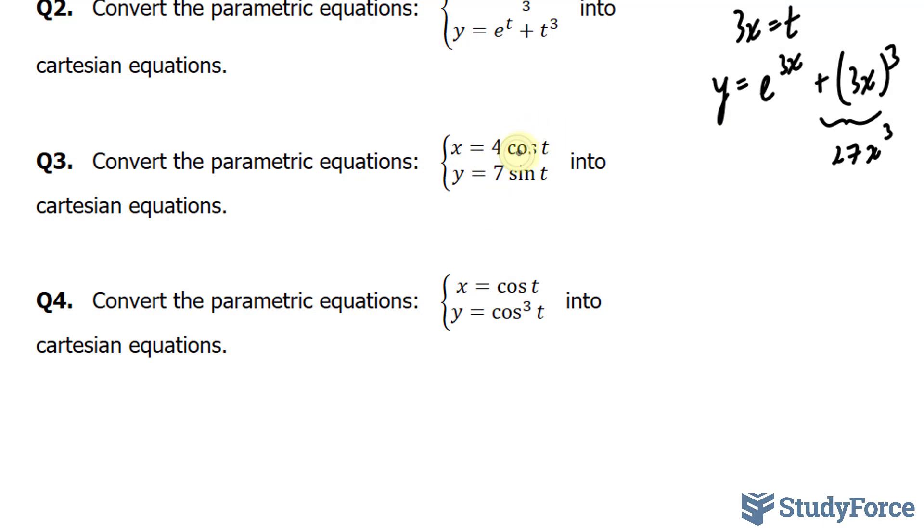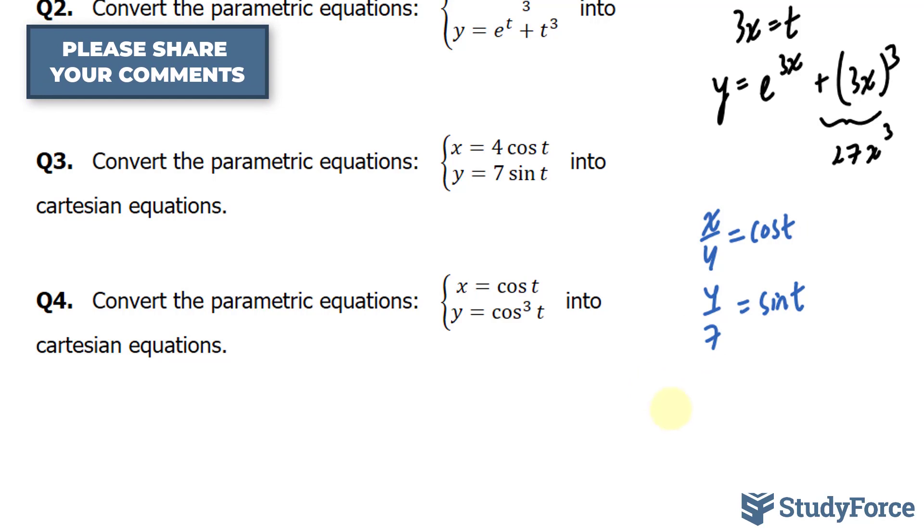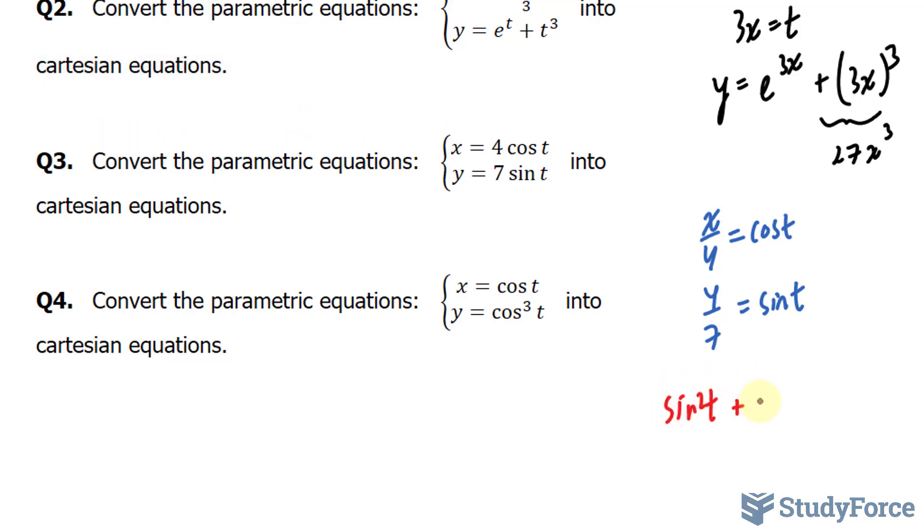Instead, what you want to do is isolate for cosine t and sine t. Let me show you what I mean. I have x over 4, cosine t. And I have y over 7, sine t. Now interestingly, if you remember the Pythagorean identity in trigonometry, we had sine squared t plus cosine squared t is equal to 1.